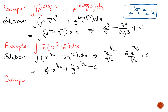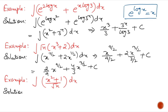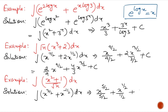Next example: Integrate (x² + 1) divided by √x with respect to x. When we simplify this question we get x^(3/2) + x^(-1/2). Integrating, we get x^(5/2) upon 5/2 plus x^(1/2) upon 1/2 plus c. The answer is (2/5)x^(5/2) + 2√x plus c.